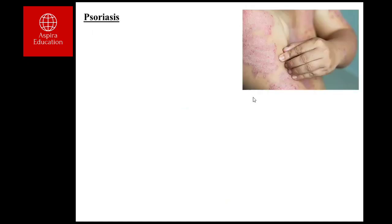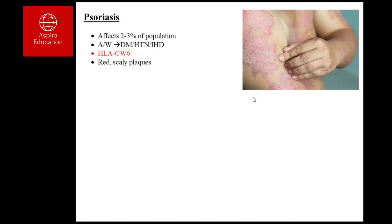Psoriasis is one of the most common skin diseases. In UK medical exams, about two out of eight dermatology questions concern psoriasis. It affects approximately 2–3% of the population. Common risk factors include diabetes, hypertension, and ischemic heart disease. There is a genetic predilection with HLA-Cw6. It presents with red scaly plaques.